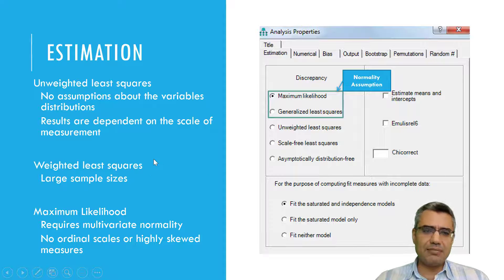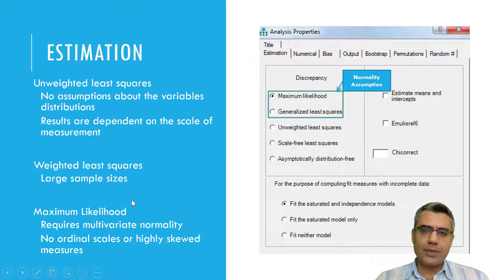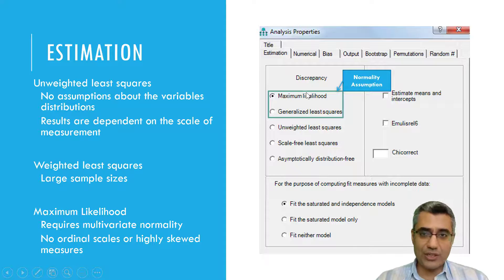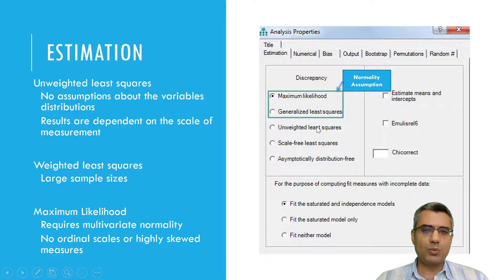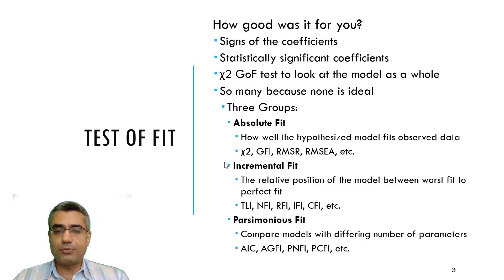By default, we use maximum likelihood estimation, because it's not dependent on the scale you use and doesn't require a very large sample size. However, you need to make sure the multivariate normality assumption is met — we will discuss that later. So by default, maximum likelihood is selected and there's no need to make any changes when you run the test.